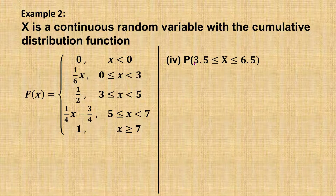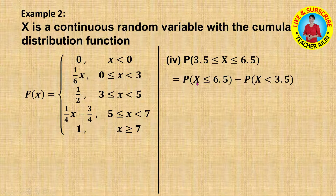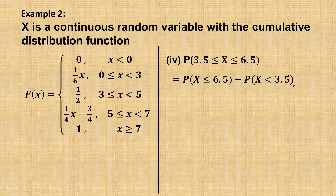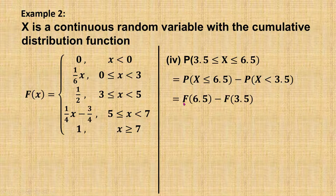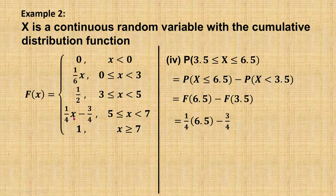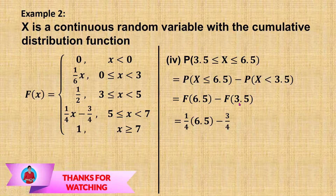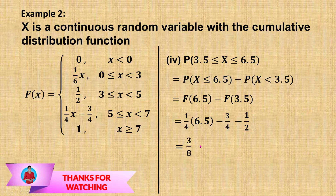Find the probability of x between 3.5 and 6.5, including both endpoints. We separate this into P(X ≤ 6.5) minus P(X < 3.5), which equals F(6.5) minus F(3.5). The cumulative function is (1/4)x minus 3/4. When x equals 6.5, F(6.5) equals (1/4)(6.5) minus 3/4. When x equals 3.5, F(3.5) equals 1/2. After calculating, the answer is 3 over 8.